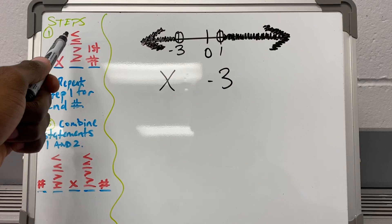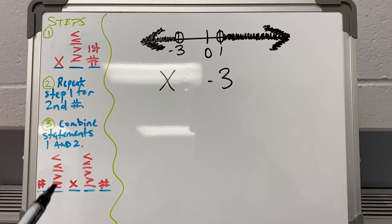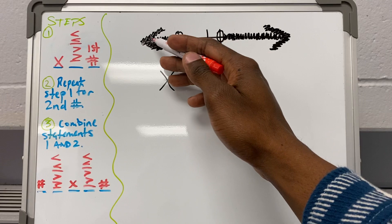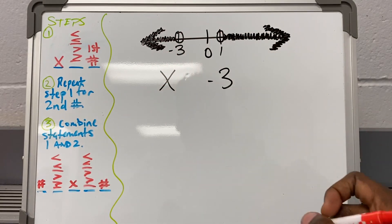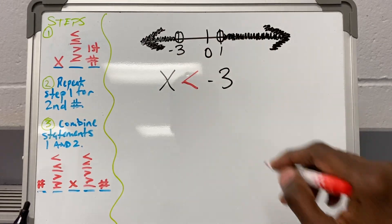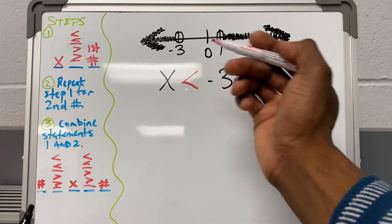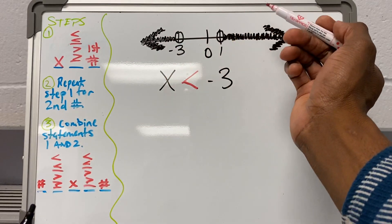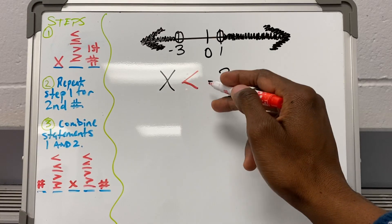The inequality signs are: less than, less than or equal to, greater than, greater than or equal to. How do I know which one to put in? It's very simple. Look at the direction that's being shaded — it's being shaded to the left. So I'm just going to make an inequality with a point going in that same direction, to the left. That becomes x is less than negative three.